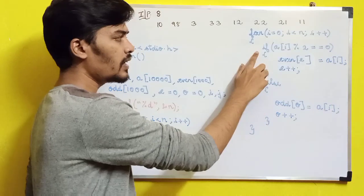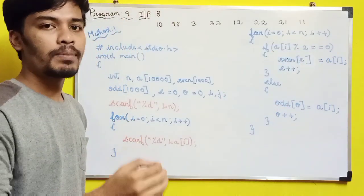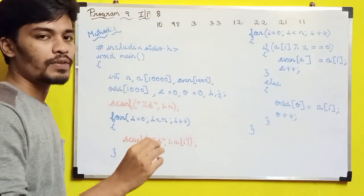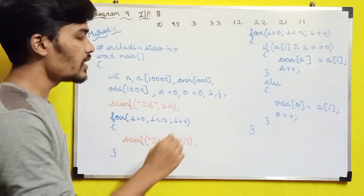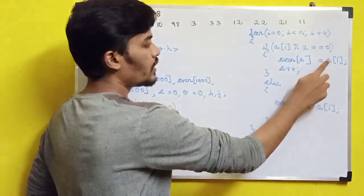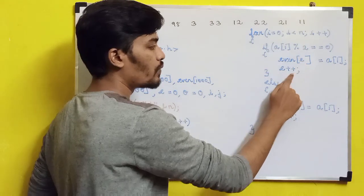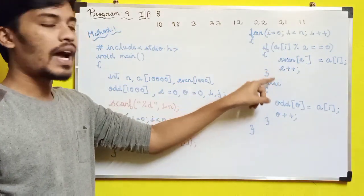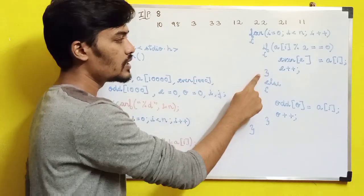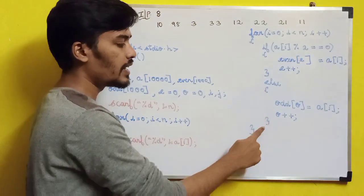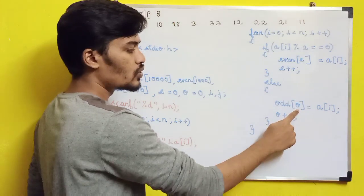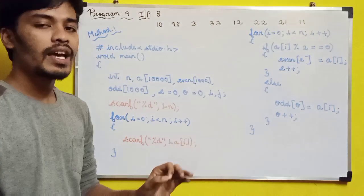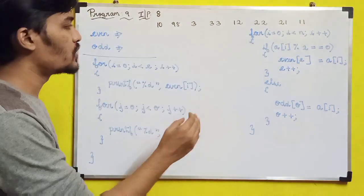The separation logic uses another for loop. Inside: if A[i] mod 2 equals zero, the number is divisible by two, so store it in the even array at index E — even[E] = A[i] — then increment E. Otherwise, the else part executes and the number is stored in the odd array at index O — odd[O] = A[i] — then increment O. This correctly separates all even and odd numbers into their respective arrays.